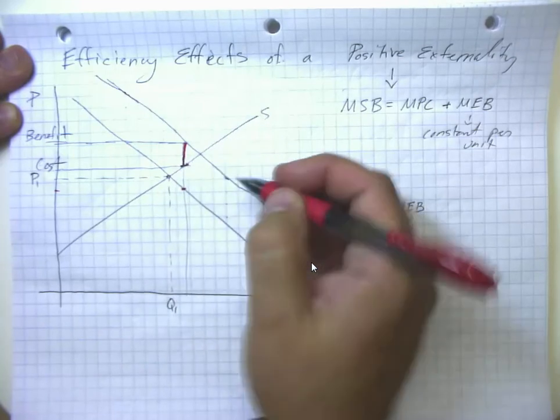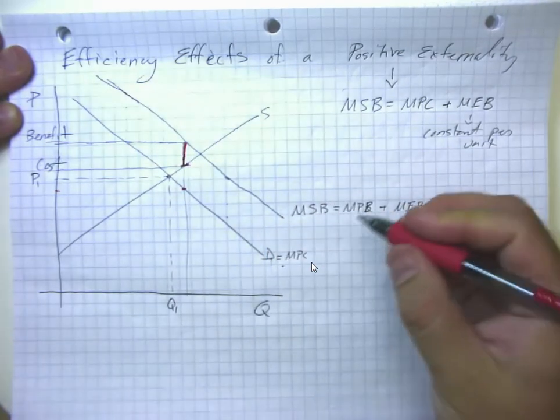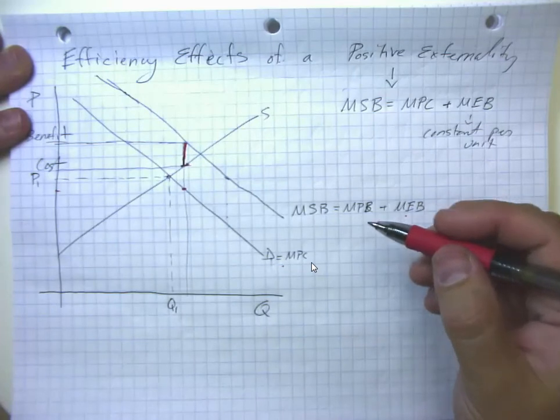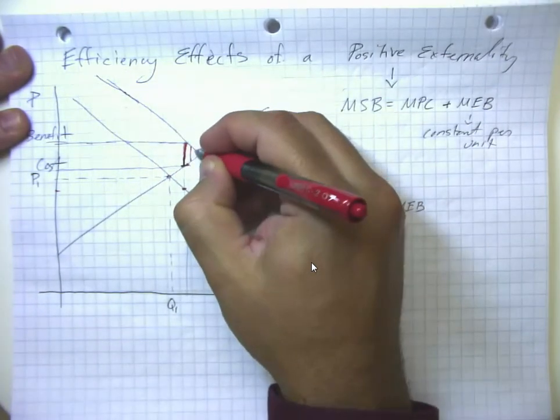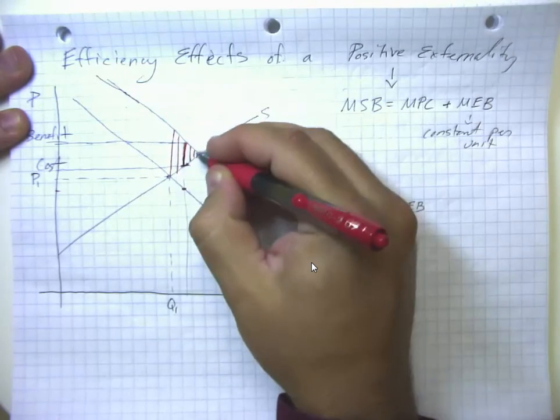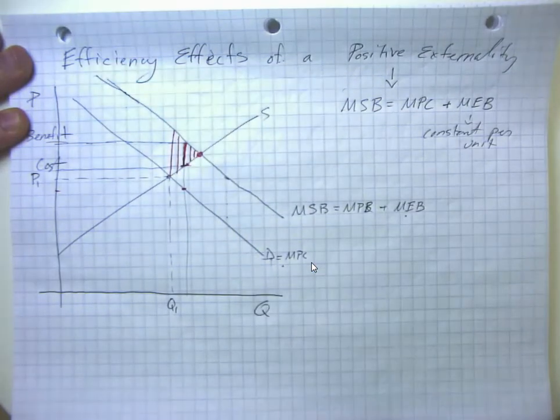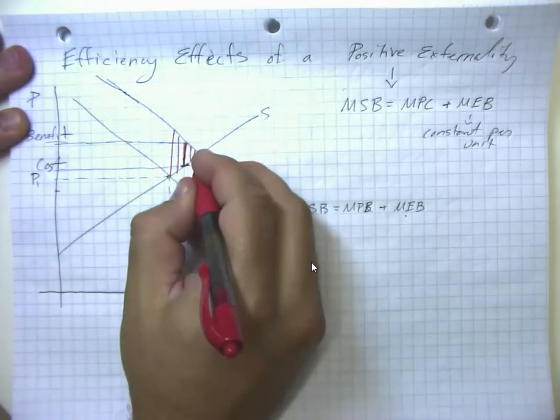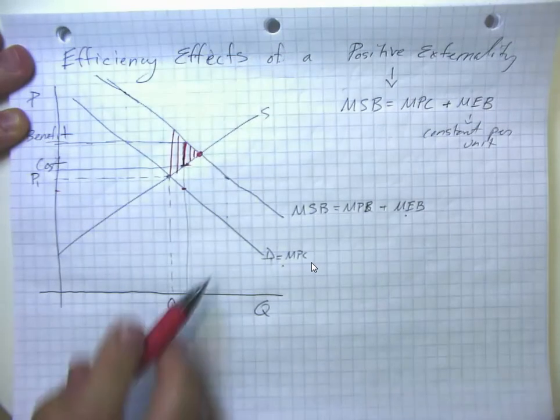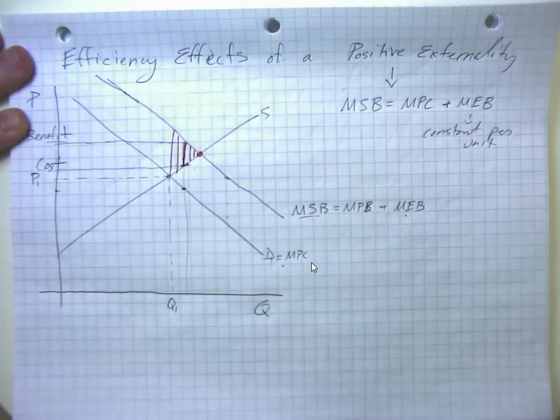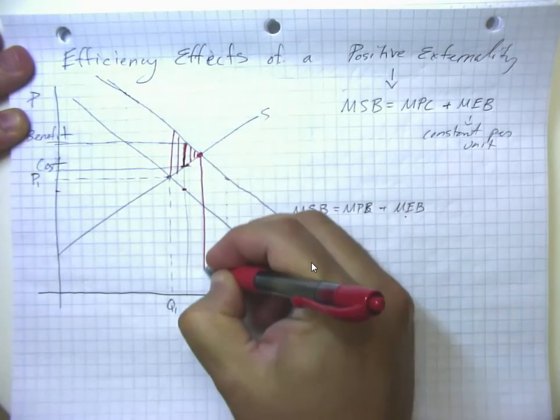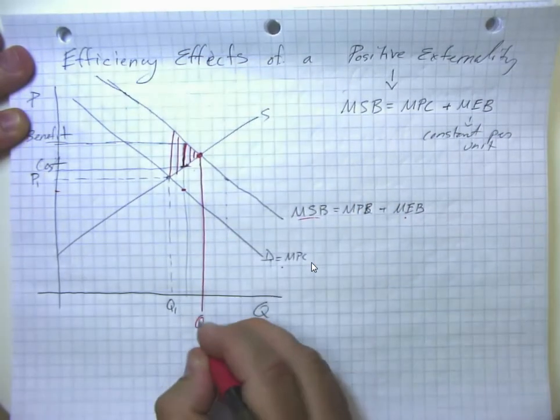But if we somehow were able to persuade them to do so, it would be overall a net benefit to society. That's going to hold true for all these transactions up until this point here. At this point, the cost of production from the supply curve and the benefit as measured by the marginal social benefit are the same. So here is our efficient quantity.